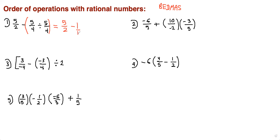This is 1 over 1, so we have to do common denominator. The common denominator is 2. 2 divided by 2 is 1, times 5 is 5, minus 2 divided by 1 is 2, times 1 is 2. Therefore we get 3 over 2 as the answer for this one.